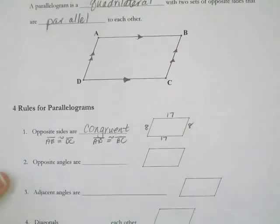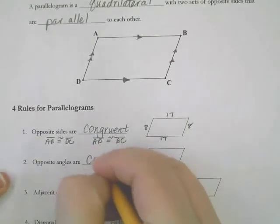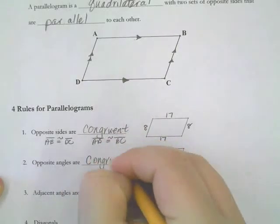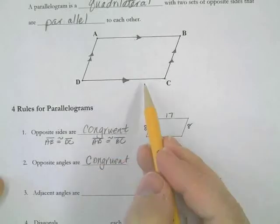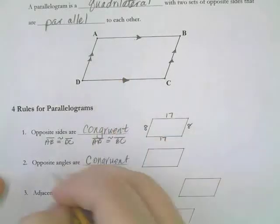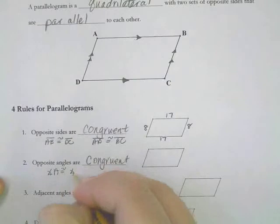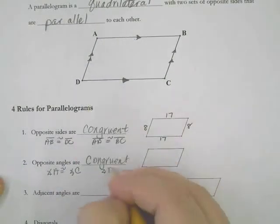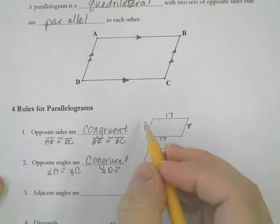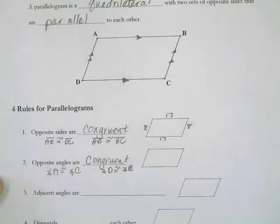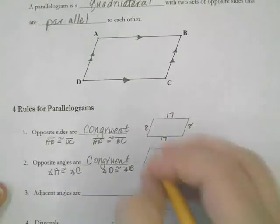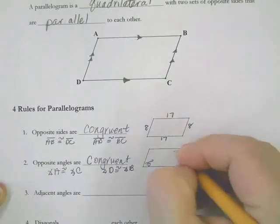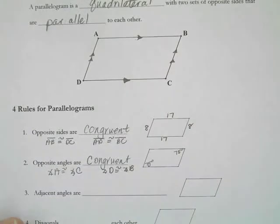Rule number two is that opposite angles are congruent. On this picture, that tells me that angle A is congruent to angle C, and it also tells me that angle D is congruent to angle B. So if I gave you that this angle was 75 degrees, then this angle over here was 75 degrees.